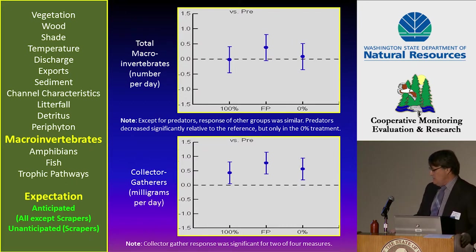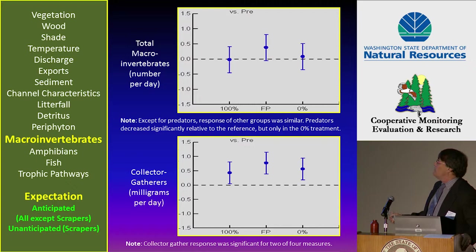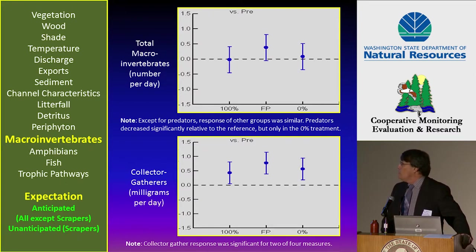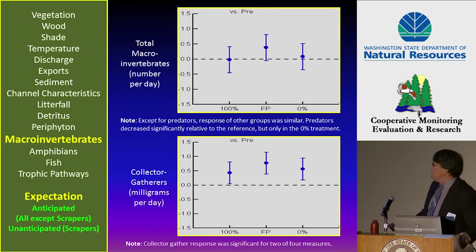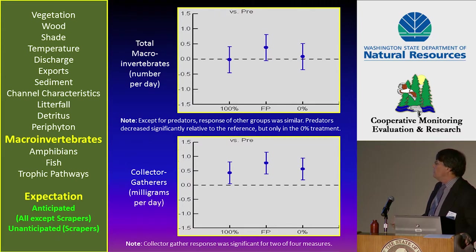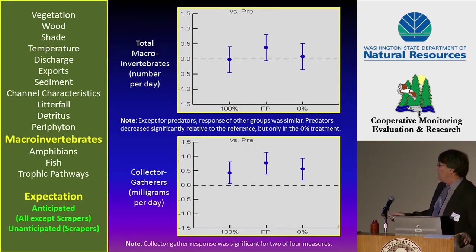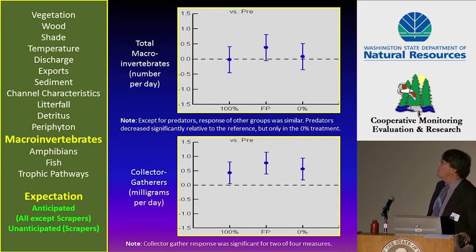Next is macroinvertebrates. The top panel shows total macroinvertebrate numbers in numbers per day, where we saw no significant difference across total macroinvertebrates. This pattern was true for all other groups except two. One was that predators differed only in the 0% treatment. The second group is collector-gatherers, which showed a uniform response across all treatments relative to the reference, but was not different between those treatments. All the responses here were anticipated with the exception of the functional group scrapers, and I'll come back to why that's an issue in a little bit.